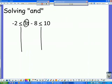So we're solving this for t. The very first thing we need to do is eliminate this minus 8. Now since we have two boundary lines, not only are we going to add 8 in the middle, but we need to add 8 on each side of those boundary lines.